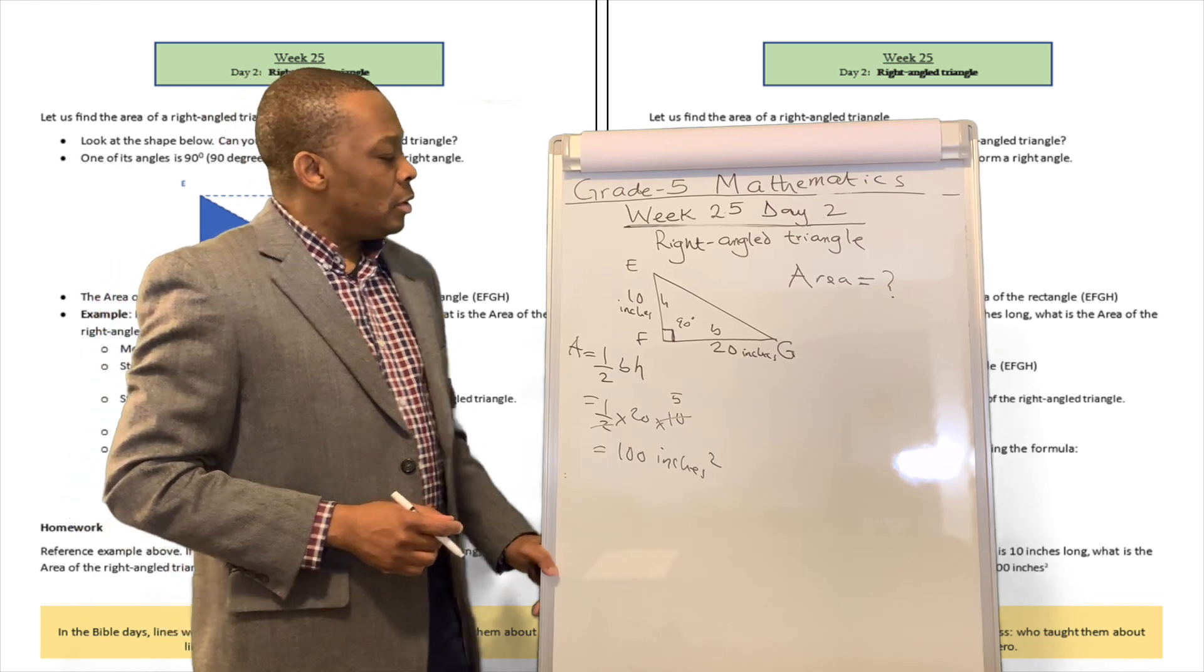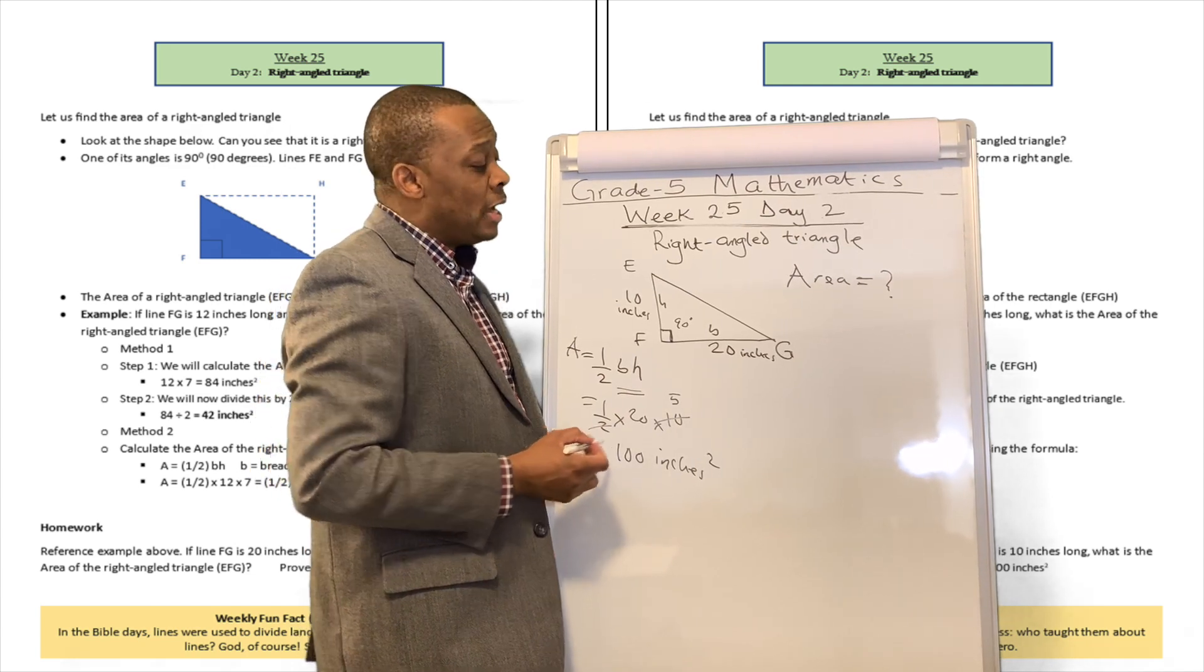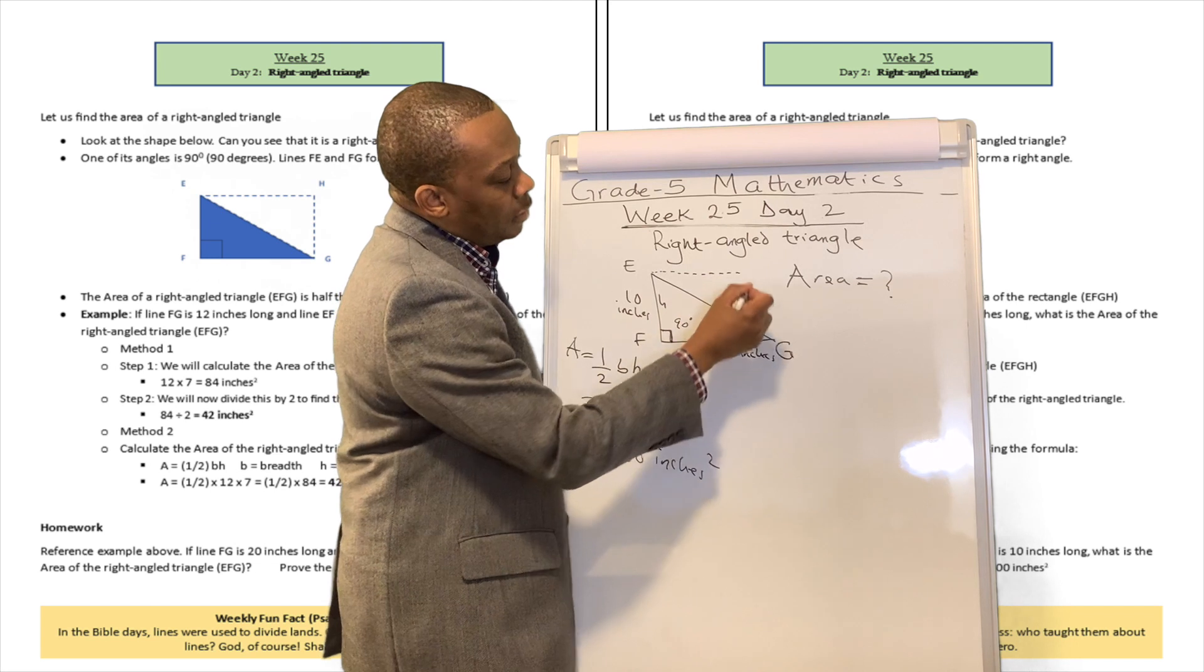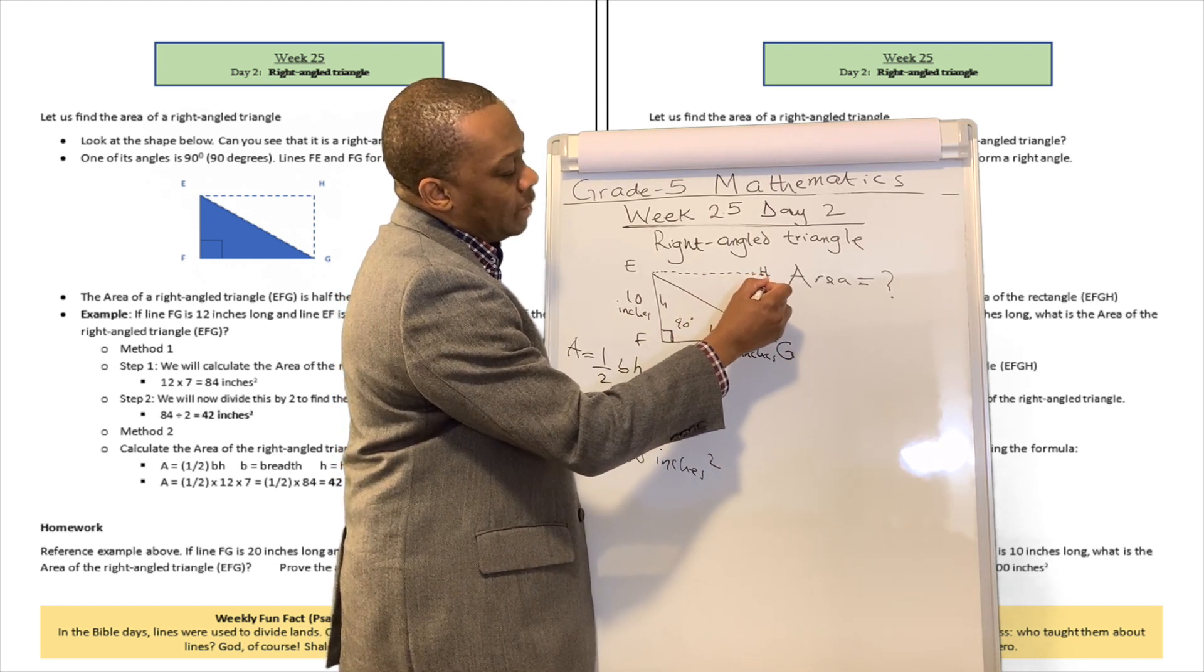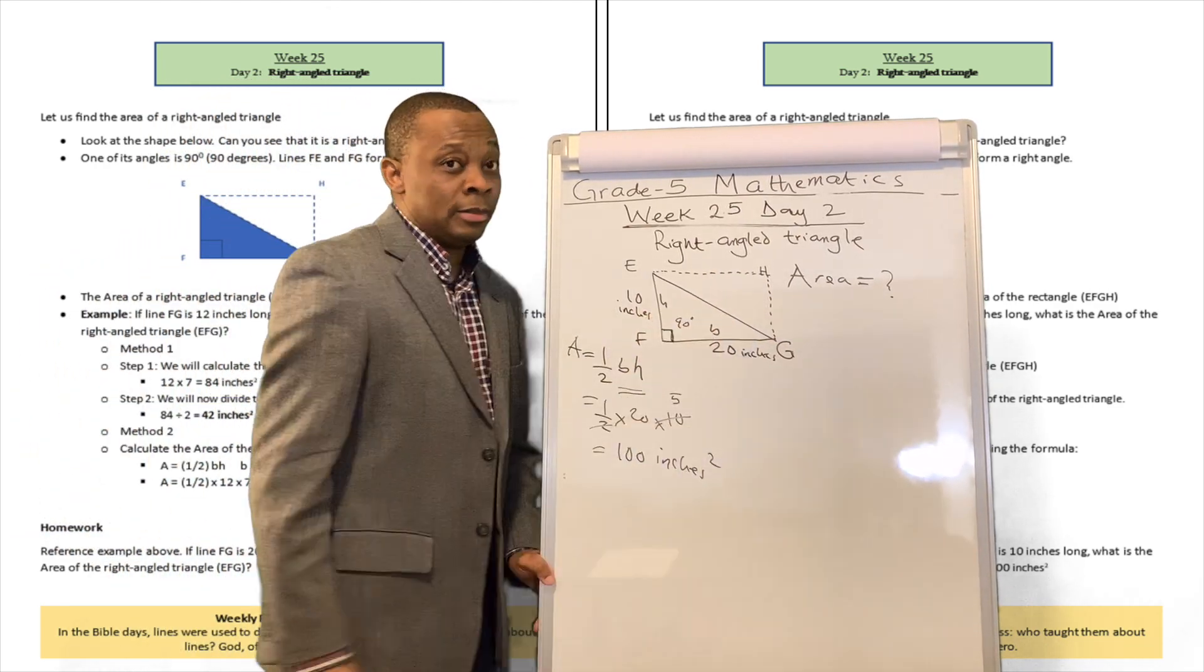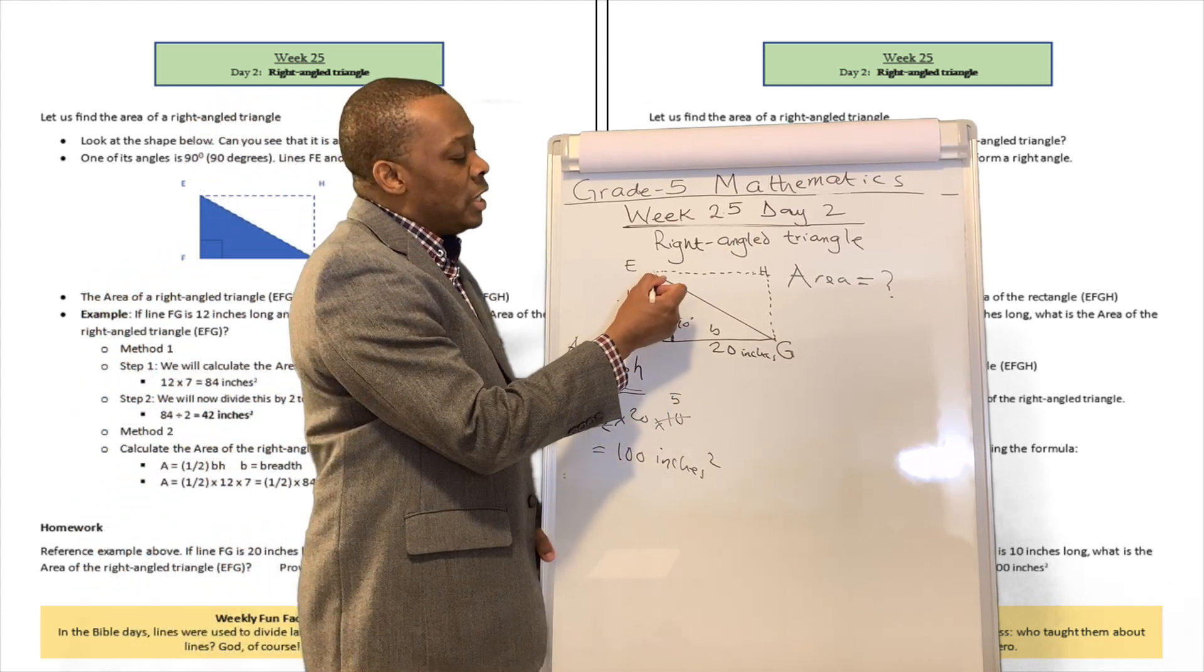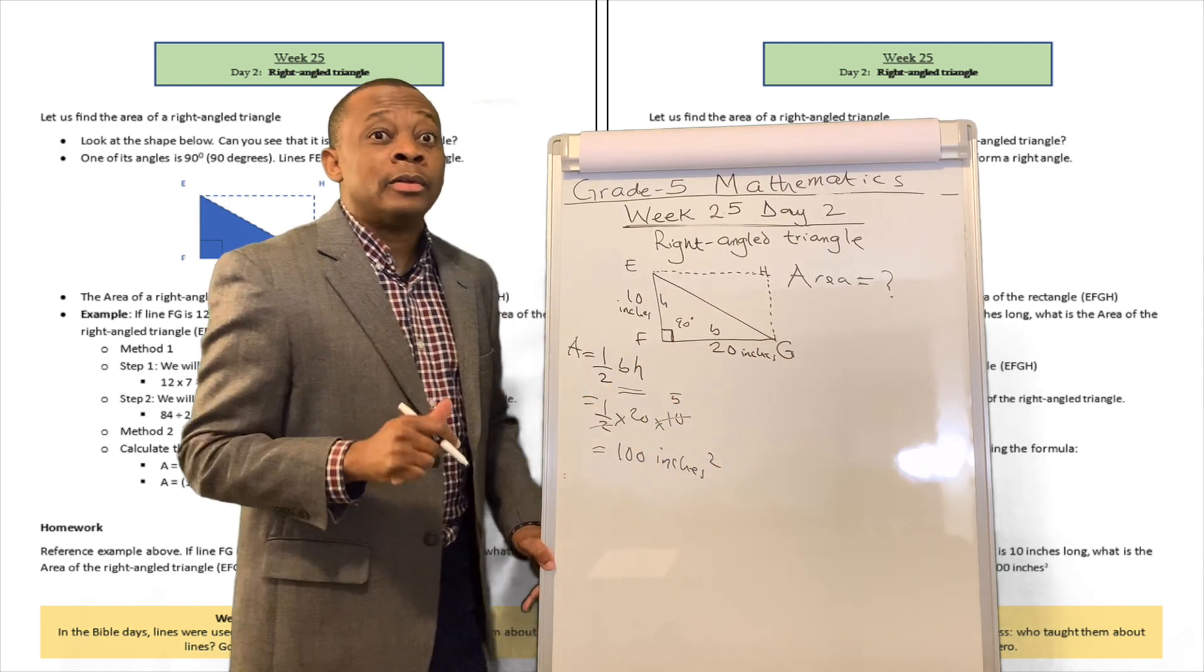Now, what if we want to prove that this formula is actually right? How do we do that? Let's go ahead and draw an imaginary line from here to point H, and then draw another imaginary line over there to point G to form a rectangle. Did you see that this looks like a rectangle right now? If you're looking from EHGF, that looks like a rectangle.